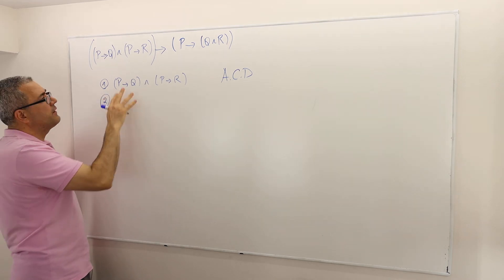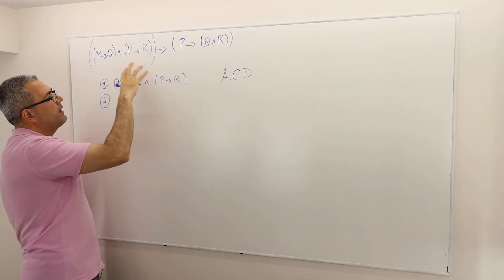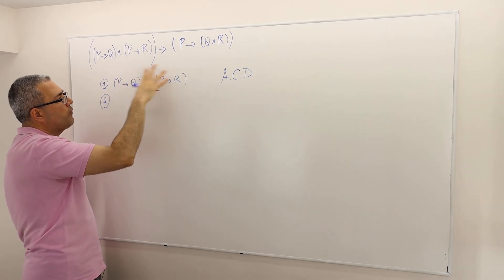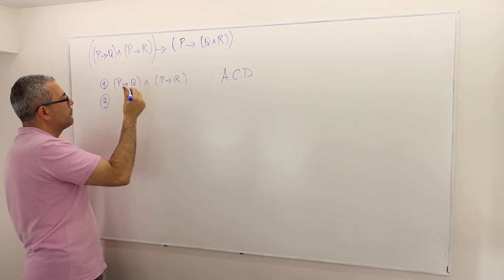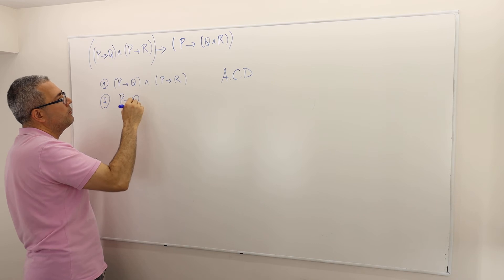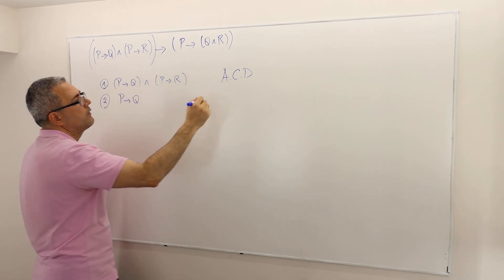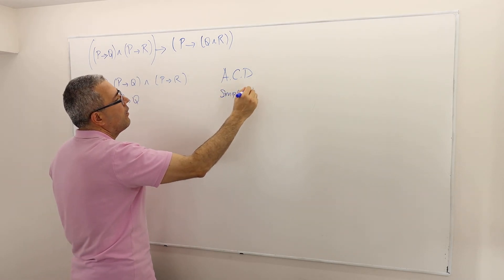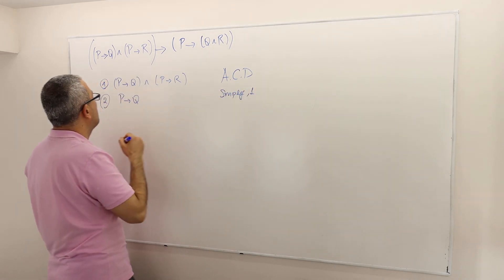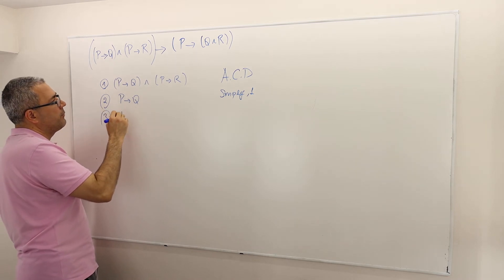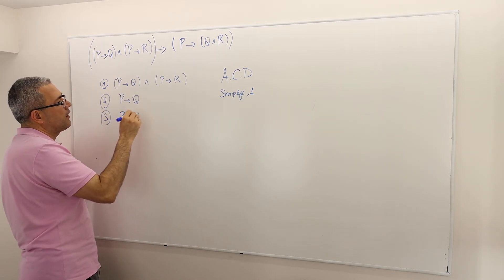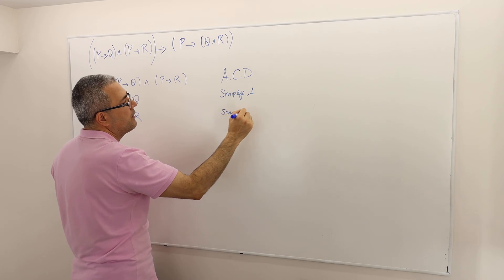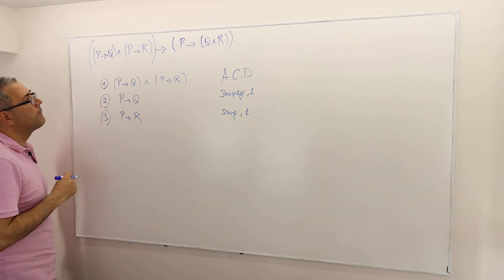Simplification: this is an 'and' statement. Something and something is true means both things are true. So P implies Q must be true — this is simplification of the argument in line one. And similarly, P implies R must be true — this is again simplification of argument in line one.